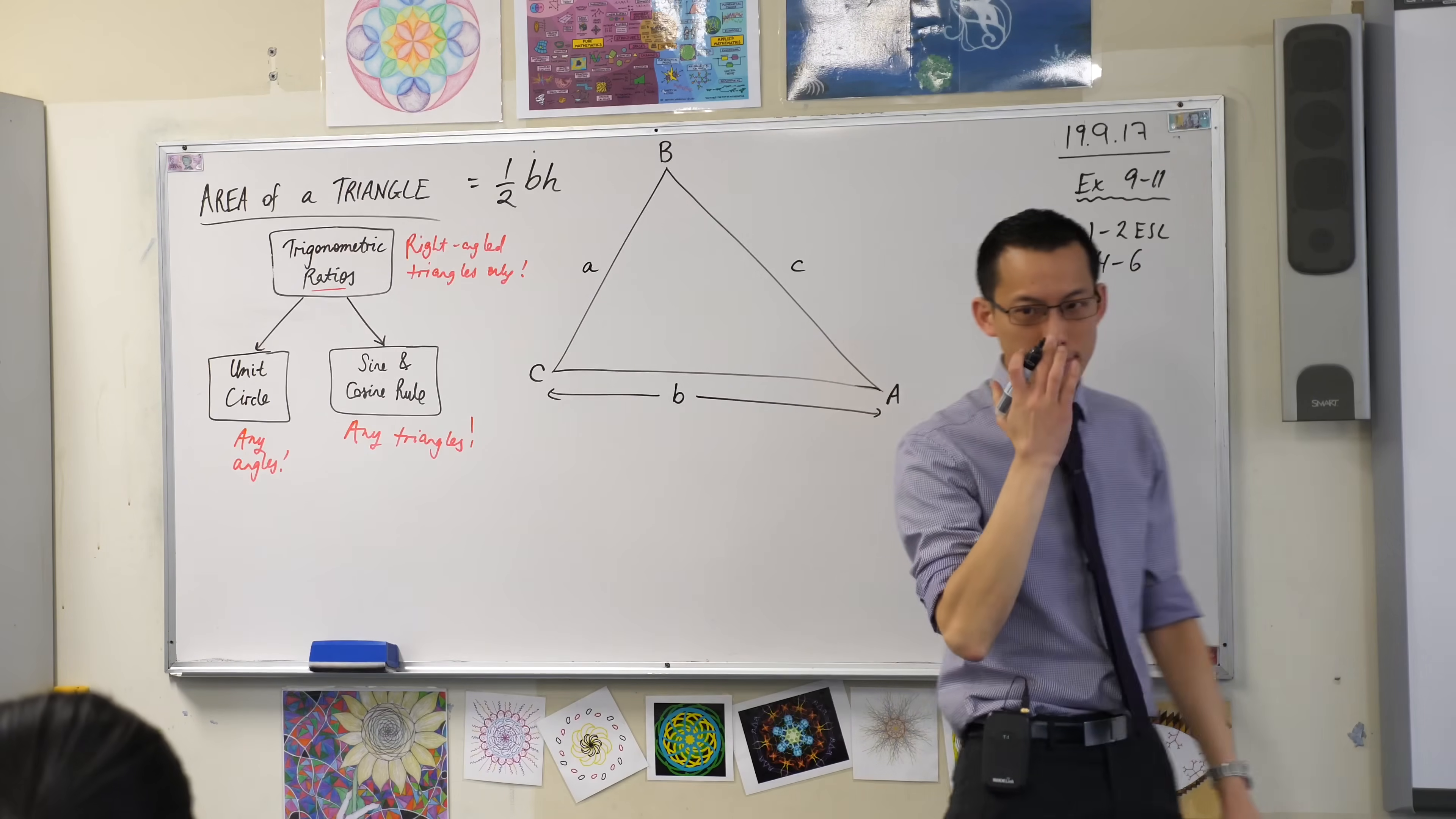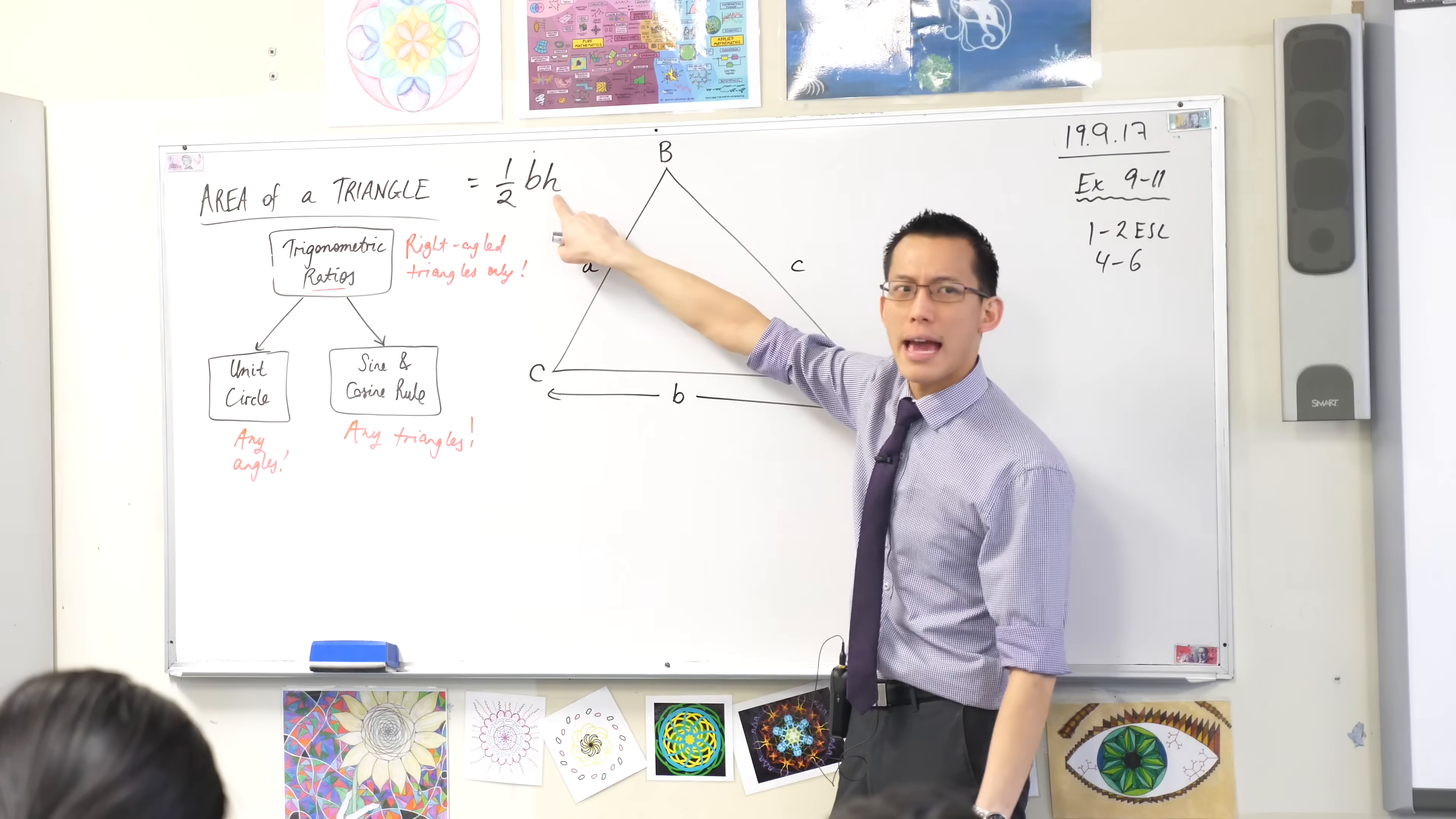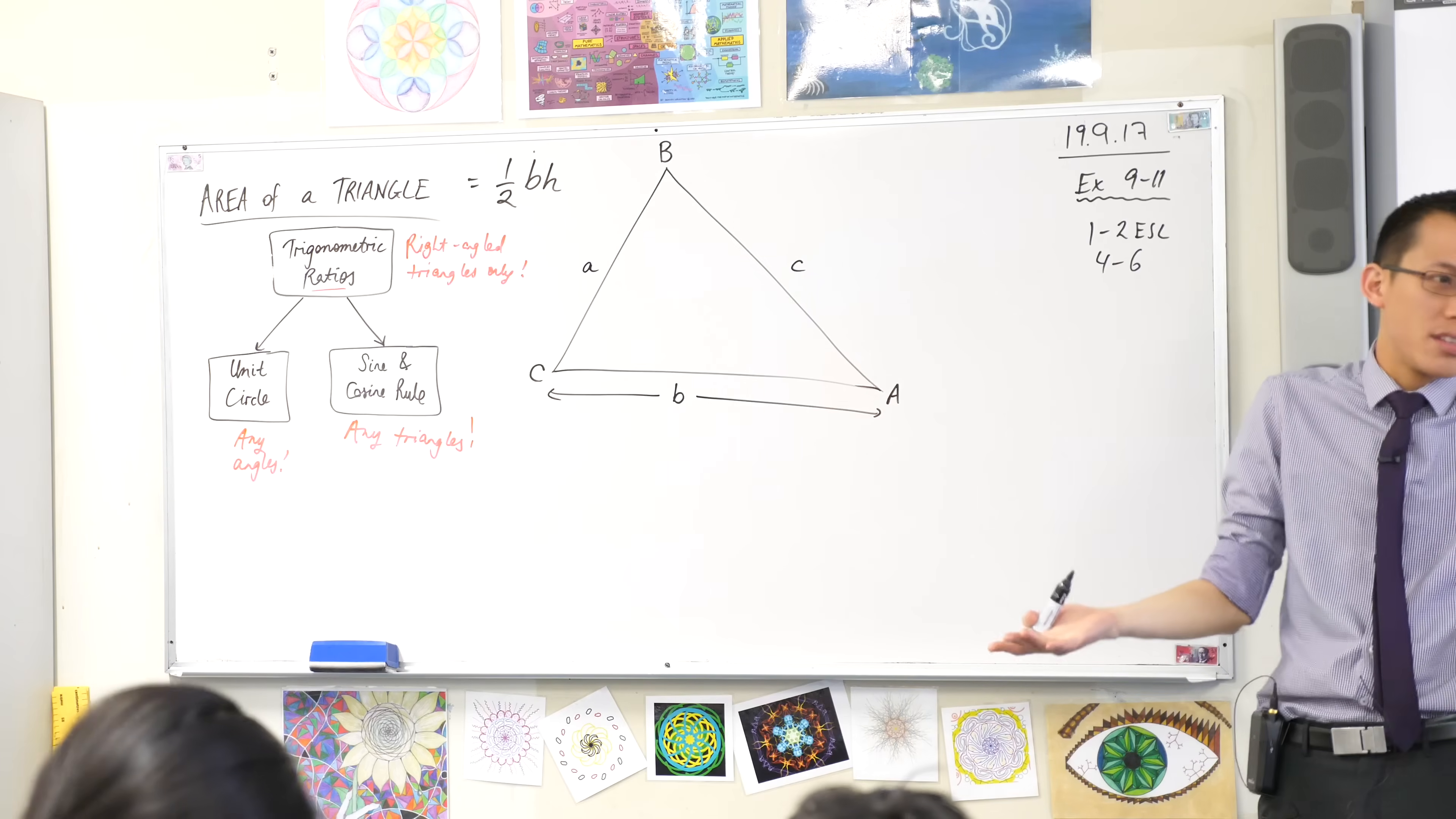Now, just like when we were thinking about trigonometric ratios, this formula only works in very specific circumstances. You need to have a base, and this height is not just any height. Height is short for perpendicular height. Very good.